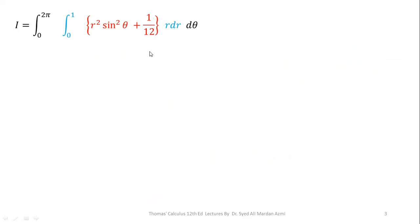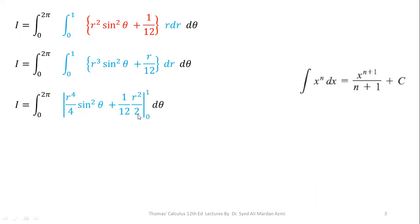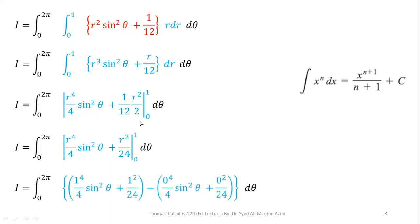In the next step, we will perform integration with respect to R. We multiply the term inside the brackets by R, giving R cubed sin squared Theta plus R over 12. We can integrate both terms using the power rule: X raised to power n dx equals X raised to power n+1 over n+1 plus C. The integration of R cubed gives R to the power 4 over 4, and the integration of R gives R squared over 2. Applying the fundamental theorem of calculus with limits 0 to 1, the lower limit gives 0, so we are left with 1 over 4 sin squared Theta plus 1 over 24, times dTheta.